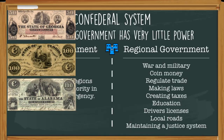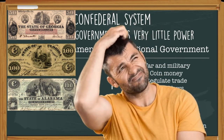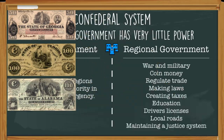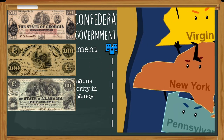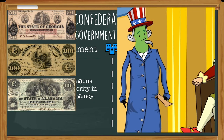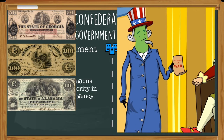You might be asking, what's the point? Why bother having a central government if it can't really tell the states or regions what to do? The concept is for each region to be like its own nation and only really act together with the other regions in times of emergencies. They're oftentimes referred to as loose alliances.